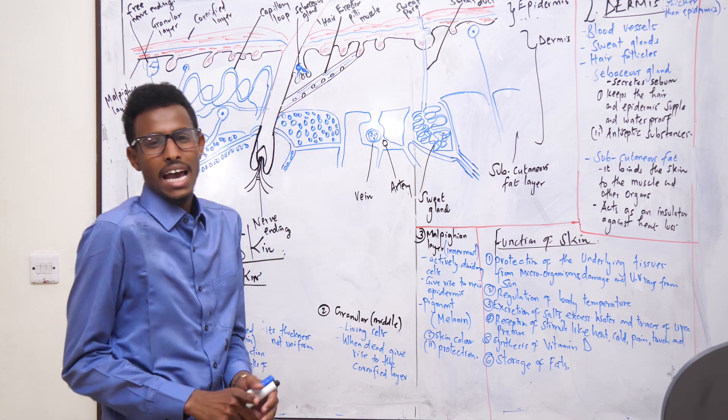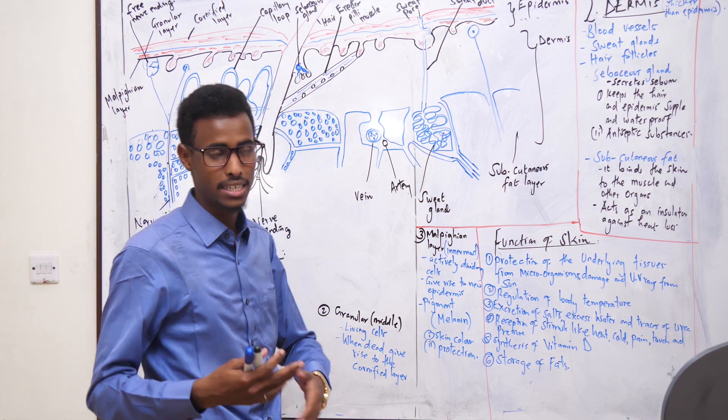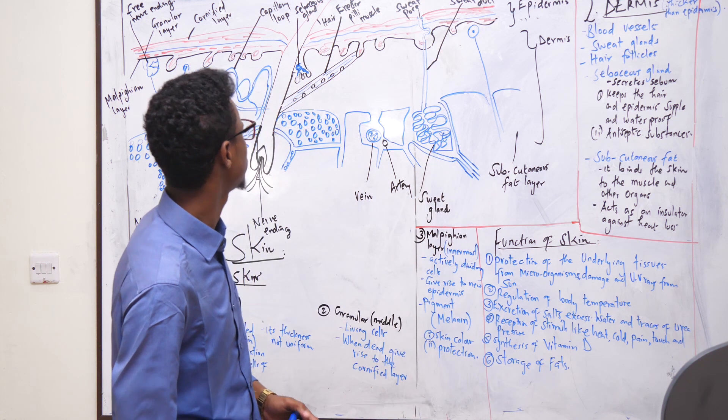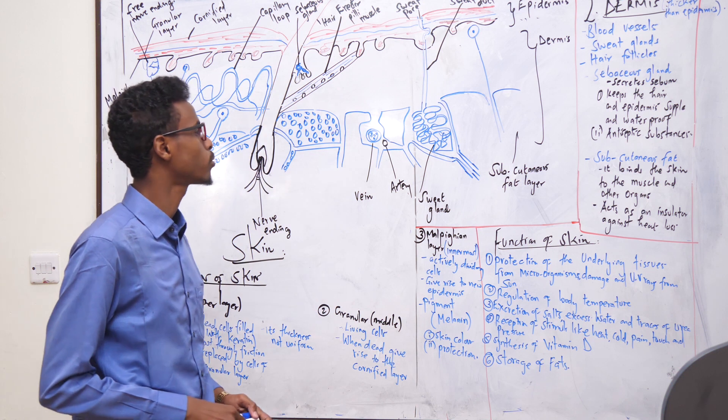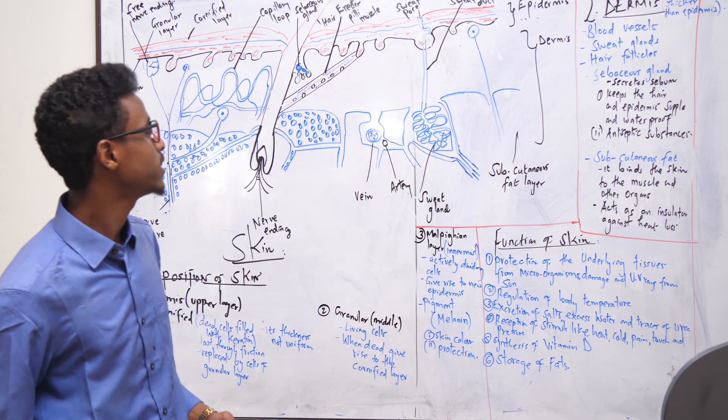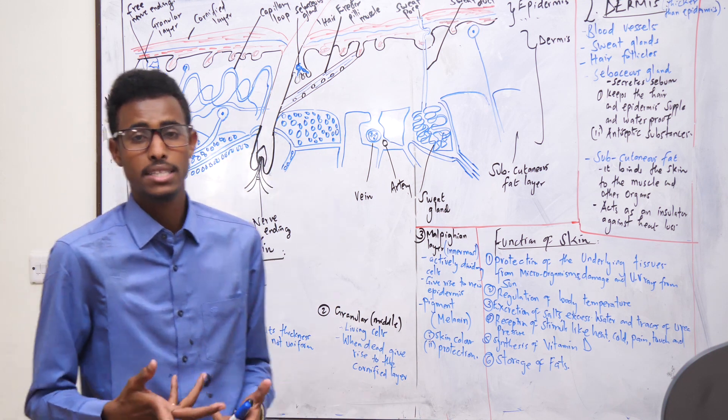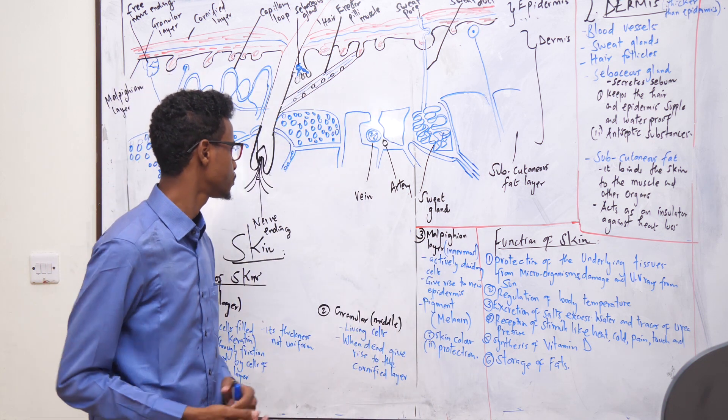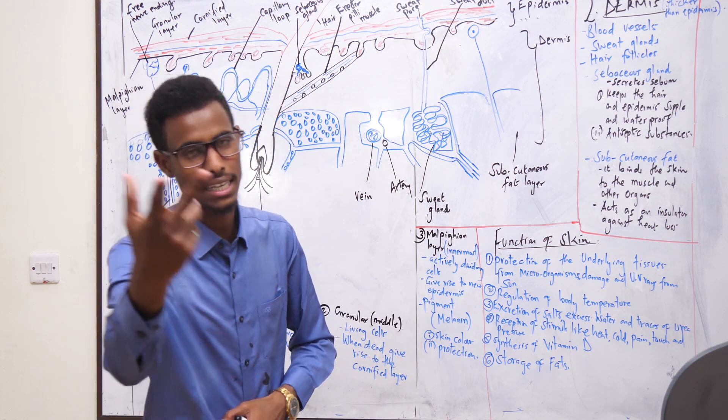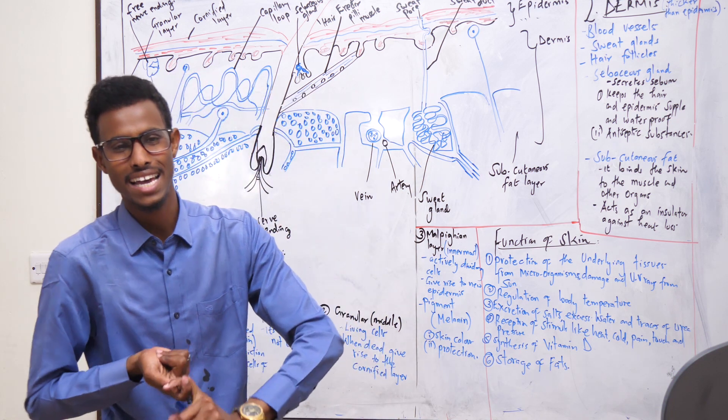At low temperature, the erector pili muscle contracts and the angle of the hair follicle stands erect, trapping a layer of air which acts as insulation, hence little or no heat is lost. The sebaceous gland secretes sebum. What functions does sebum play? Number one, it keeps the hair and epidermis supple and waterproof. Number two, it has antiseptic substances that prevent attack by microorganisms. The subcutaneous fat layer contains fats and binds the skin to the muscle and other organs. It also acts as insulation against heat loss.